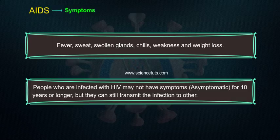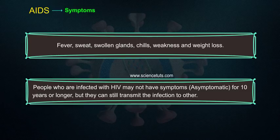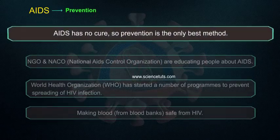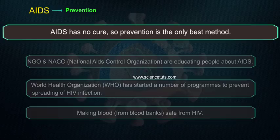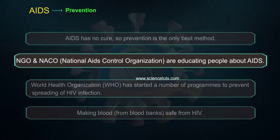People who are infected with HIV may not have symptoms — they can be asymptomatic for 10 years or longer — but they can still transmit the infection to others. AIDS has no cure, so prevention is the only best method.